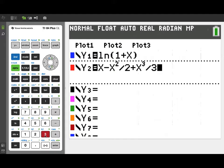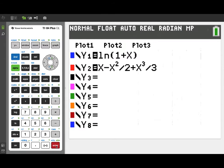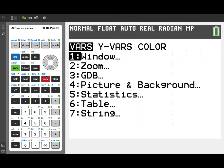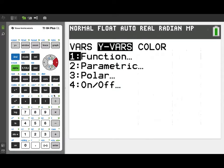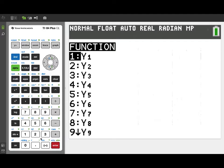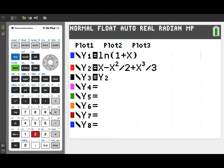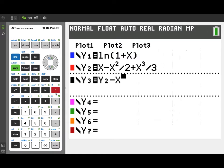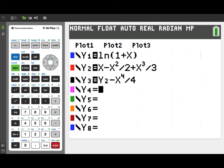A Maclaurin polynomial is really just a special Taylor polynomial. It's a Taylor polynomial expanded around the point x equals 0. Now, to get our fourth degree, notice what I'm doing here is I'm going to go ahead and use y2. That's our third degree Maclaurin polynomial, and just add on an additional term. The next term is minus x to the fourth over 4. So, we now have entered the original function, natural log of the quantity 1 plus x, and the third and fourth degree Maclaurin polynomials, respectively.